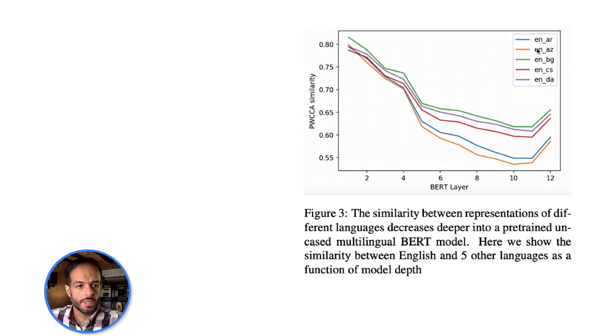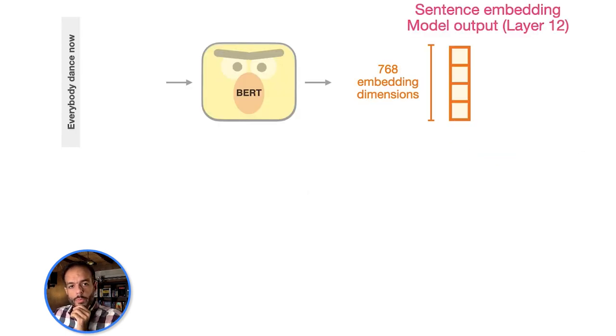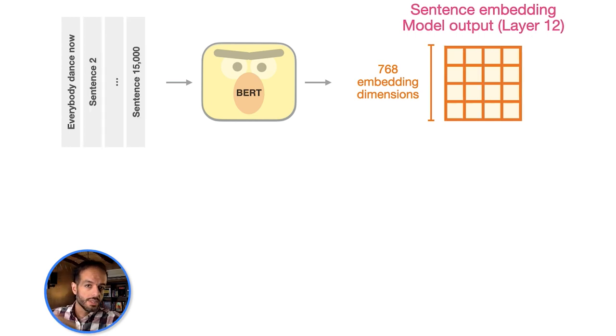This is a figure we will unpack. The x-axis here is the layer number, and this is PWCCA similarity. The blue line is English versus Arabic, comparing the representation in this model of English sentences versus Arabic sentences. To make sense of that, let's look at what that means. We have one sentence, pass it through this multilingual BERT and we have an embedding vector after the final layer. But we don't want just one input value or one sentence, we want a lot of them.